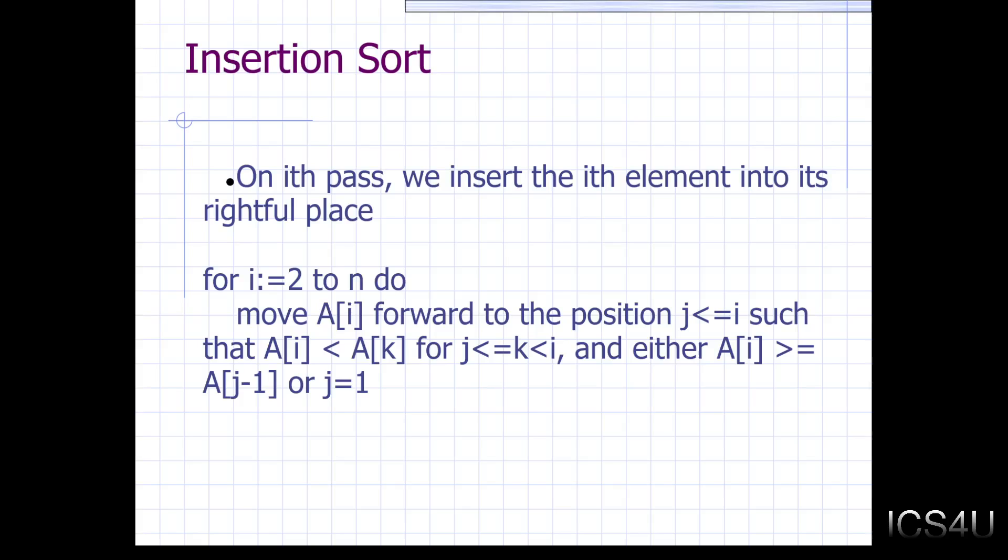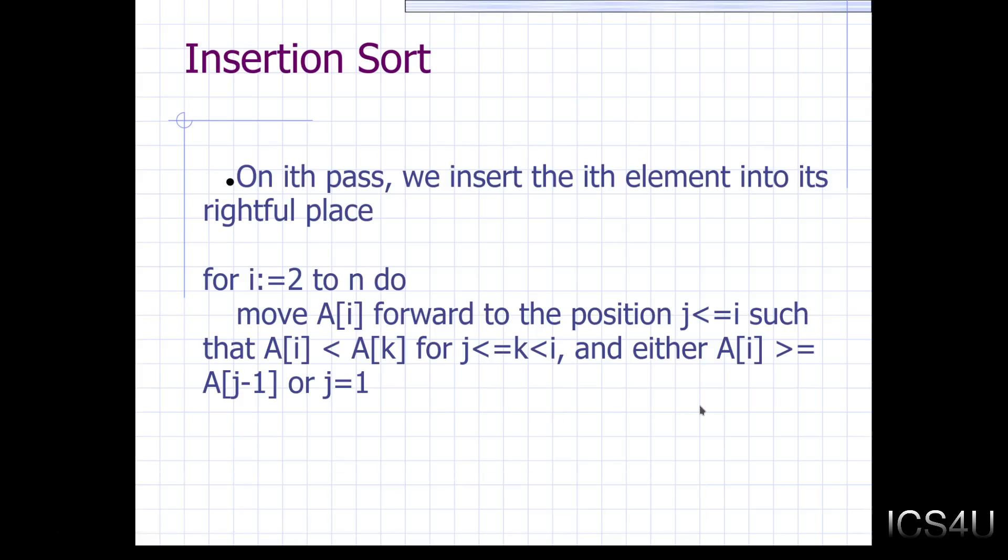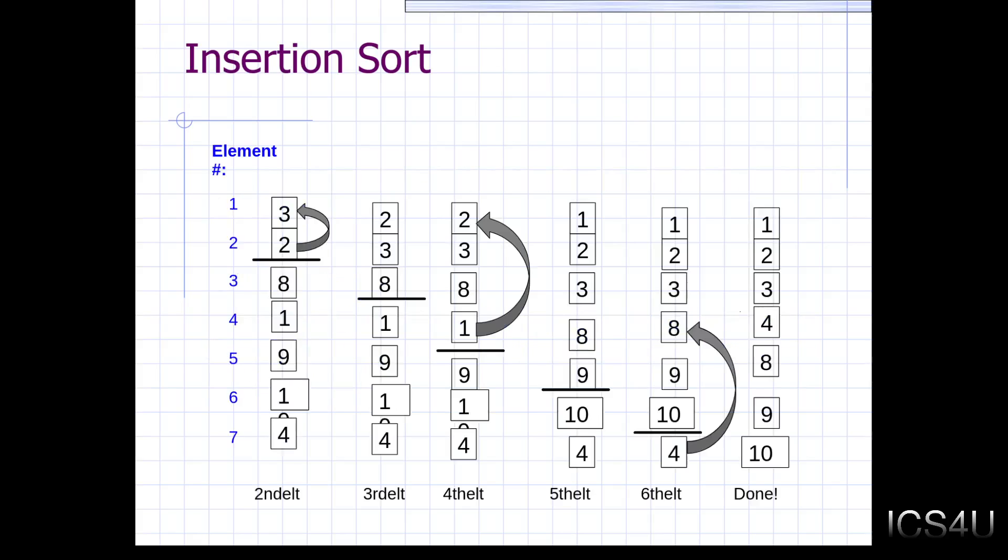Insertion Sort. All right. This is on the ith pass, on the pass number i. So let's say you have a for loop that's controlled by the variable i. That's what we mean by the ith pass. And that's just terminology that's used in textbooks. What we're going to do is we're going to insert element number i in its rightful place. So, and there's some pseudocode that might help you do that. This code is so freely available online, I'm not going to go over it very much, but you should be able to explain how insertion sort works. Again, that was described in the previous lesson that was a review and it was for the grade 11. So you can go ahead and look at that. Look at the insertion sort algorithm there.